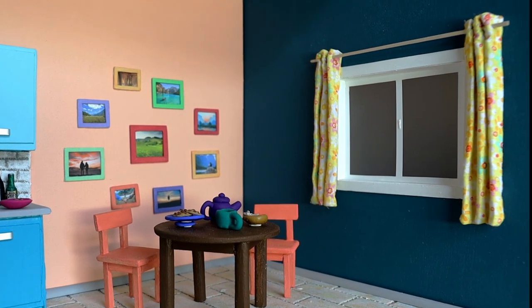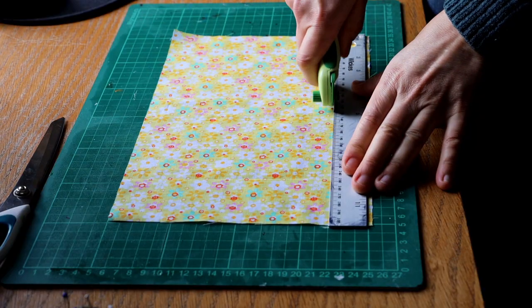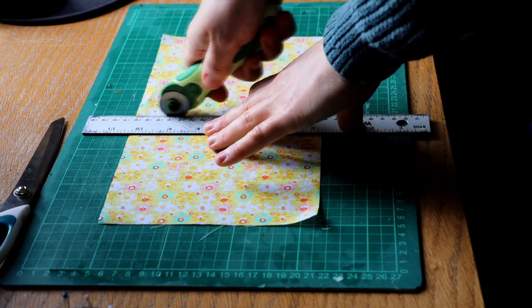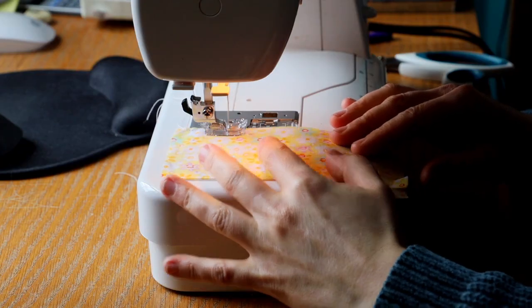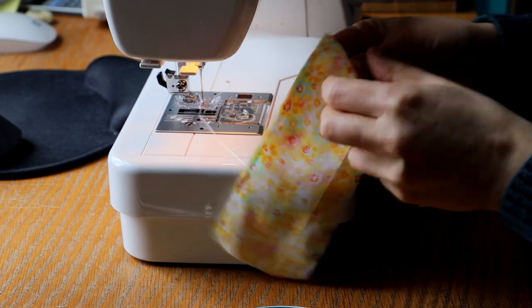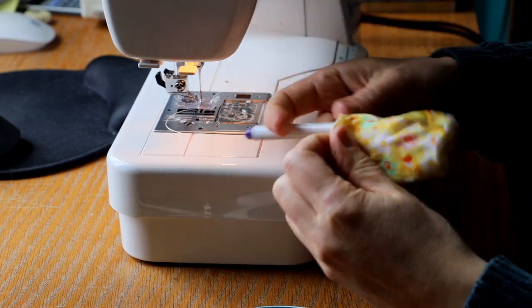I'm going to talk about the little curtains. I took a piece of fabric and cut it into four rectangles of the same size. Took two pieces and sewed them together along three edges, leaving one open so you can turn it inside out.